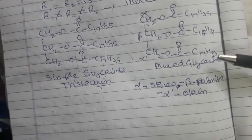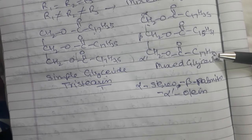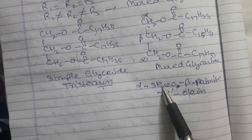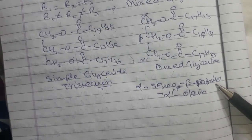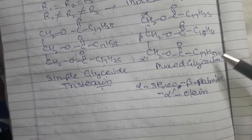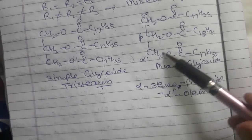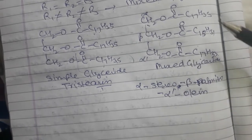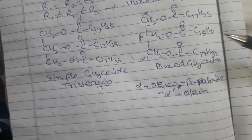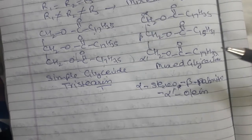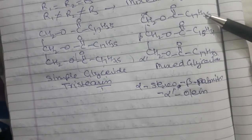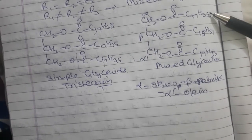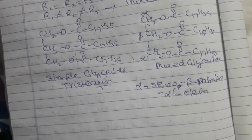When substituents are treated as groups, their names end with '-o': stearic acid becomes stearo, palmitic acid becomes palmito, and oleic acid becomes oleo, and so on. If the last chain is not considered as main chain, then it is written as: alpha-oleo, alpha-palmito, and beta-palmito, alpha-dash-stearo. So this is how it can be written.